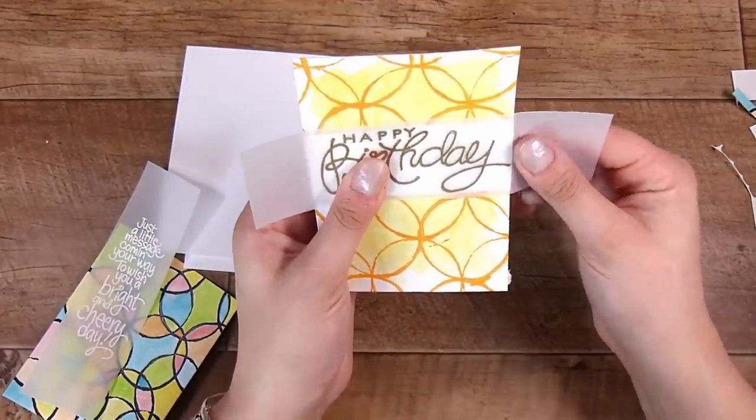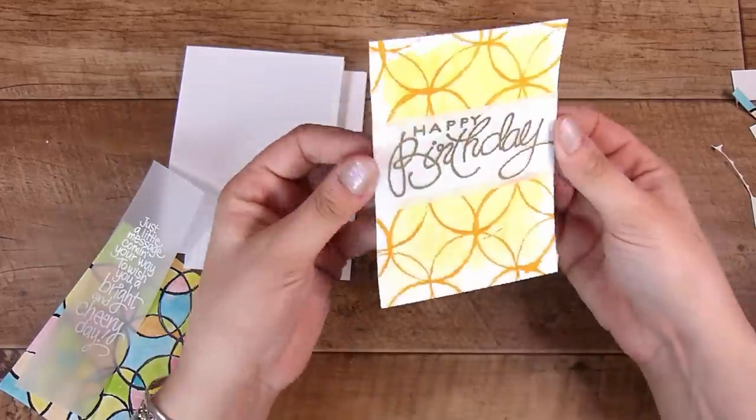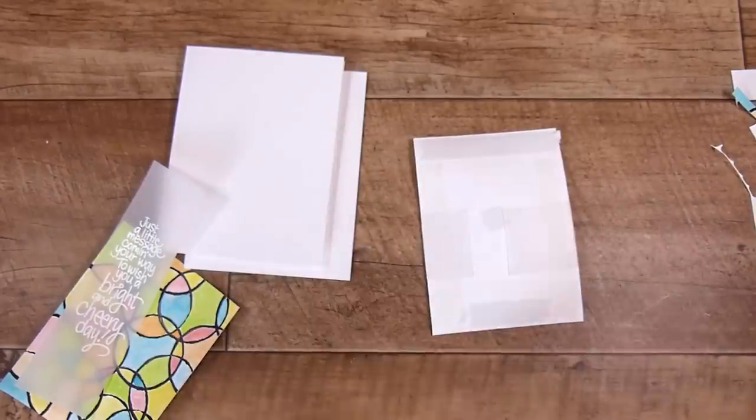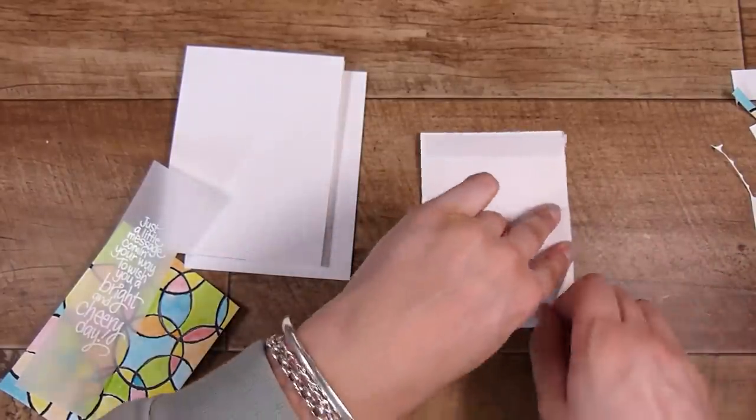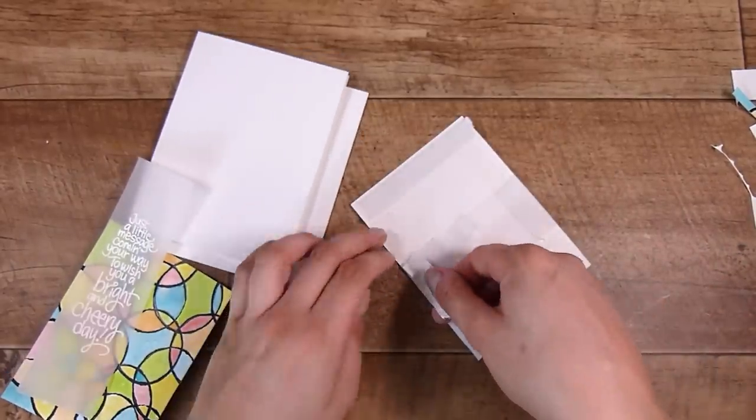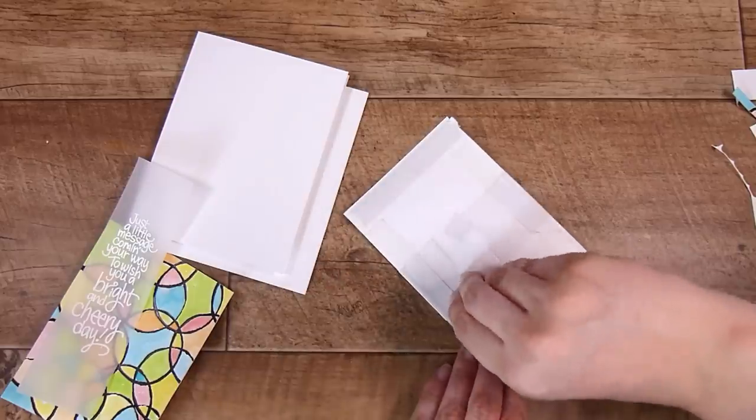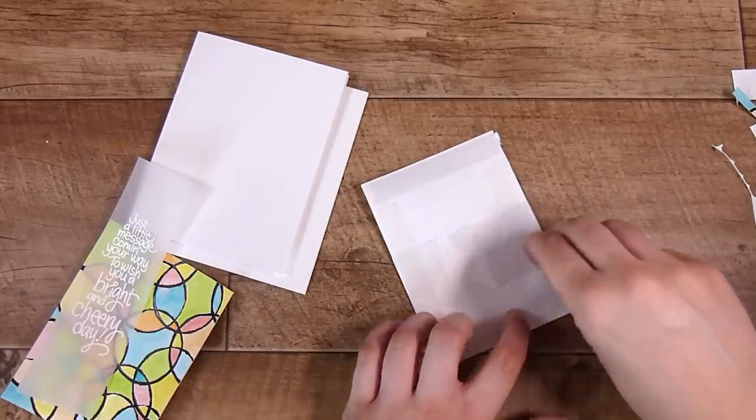At this point I already had the adhesive behind it so I was able to just wrap the vellum around and we're looking good. I did pop a little bit more adhesive on the back where the vellum had covered up that little bit, so I had taken those off already to put on my card base.